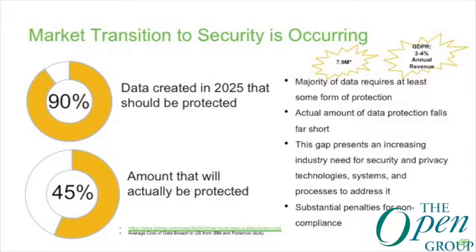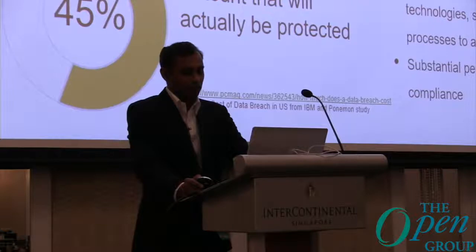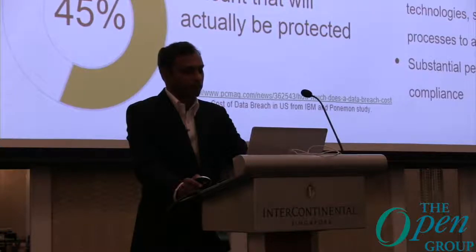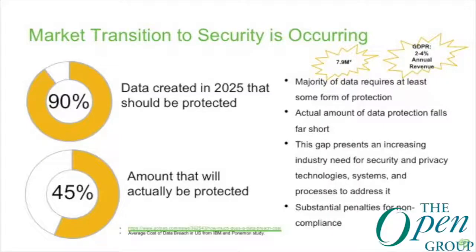Our industry experience shows that customers are realizing the amount of data that needs to be protected is growing. Data from new sources opens up new vulnerabilities to private and sensitive information. It is projected that by 2025, 90% of data created will require some form of protection, however only about 45% would be sufficiently secured. The average cost of a data breach to a company is above $7.9 million, according to the IBM Security and Ponemon Institute study conducted across 15 countries, 17 industries, and 477 global companies.